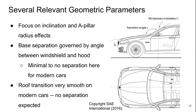There are a few relevant geometric parameters related to the shape of the windshield: the angle transition, its inclination, as well as several radii that define the curvature. We'll focus on the inclination and the A-pillar radius effects here.